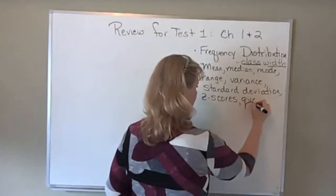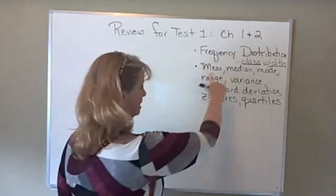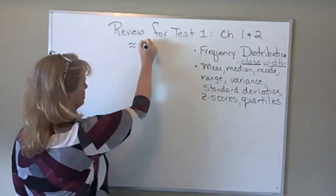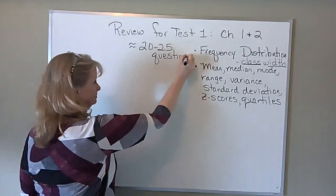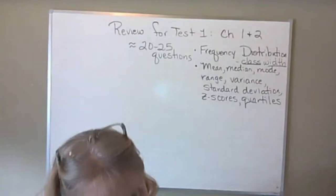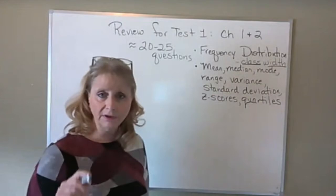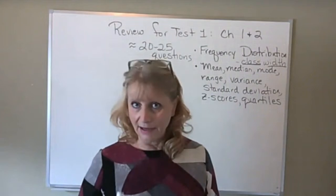I should add Z-scores and quartiles to that list — that right there would be several questions on the test. There are about 20 to 25 questions on the test. Some are multiple choice, but many are not — many are where you have to find the answer. Some of them will ask you to show work. I put a couple of show-work problems for you to practice on in the 2.5 homework. Make sure you do those and practice showing your work.